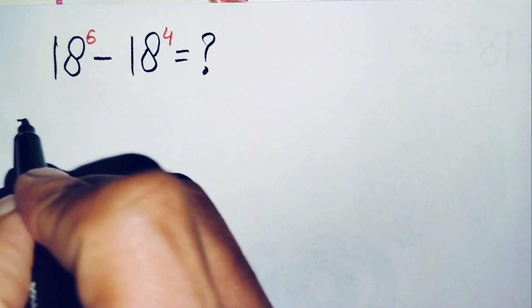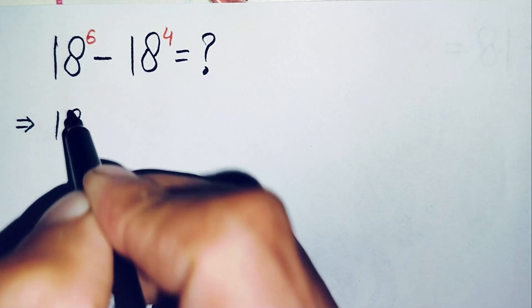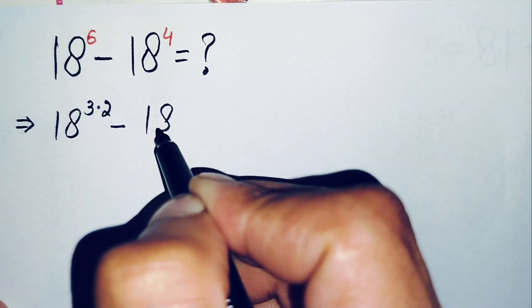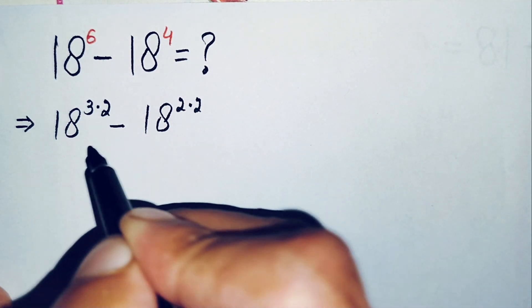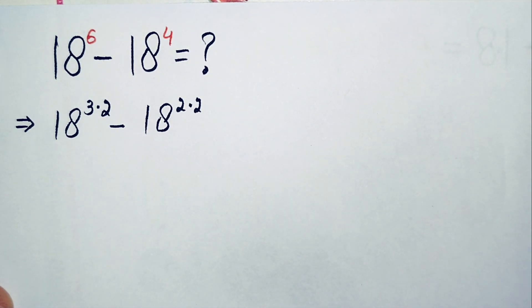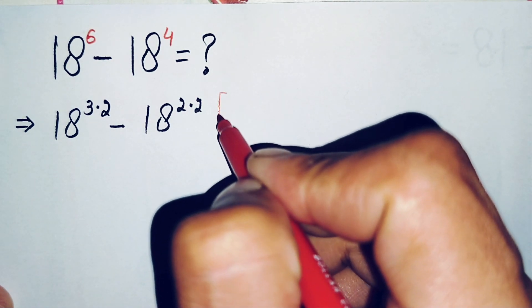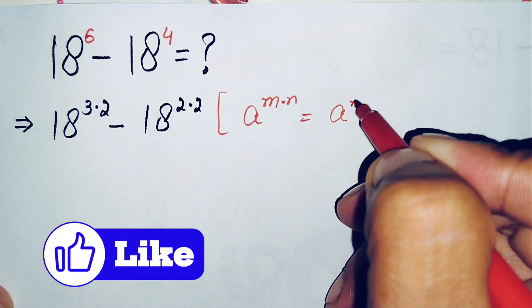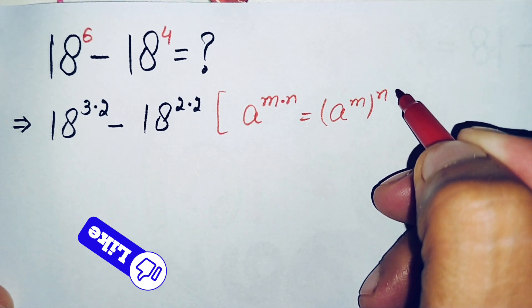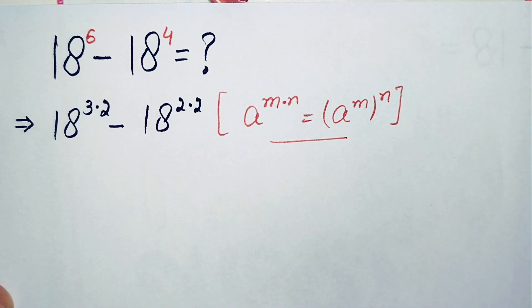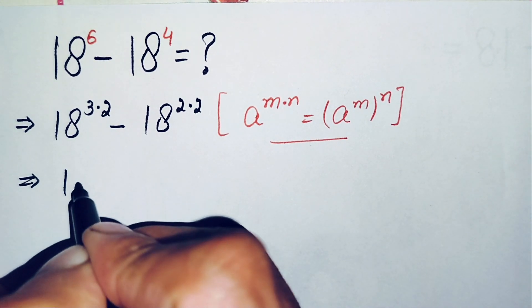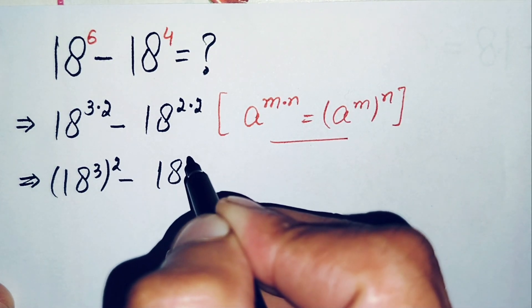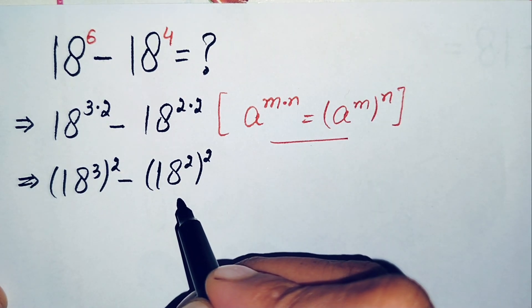First of all, we can rewrite the two terms. 18 raised to power 6 can be written as 18 raised to power (3 times 2), and 18 raised to power 4 can be written as 18 raised to power (2 times 2). Using the exponential property r^(m×n) = (r^m)^n, this becomes 18³ whole squared minus 18² whole squared.